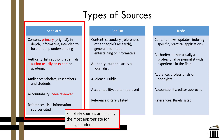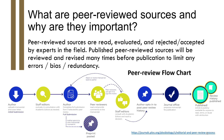When you are doing academic research, you will want to focus on scholarly sources — they are primary sources, the author is an expert or an academic, and they are peer reviewed. These are three very important aspects to making sure you are using credible information. Peer reviewed sources are read, evaluated, and rejected or accepted by experts in the field. Published peer reviewed sources will be reviewed and revised many times before publication to limit any errors, bias, or redundancy. I've included an image here that shows the whole process in a peer review flow chart.